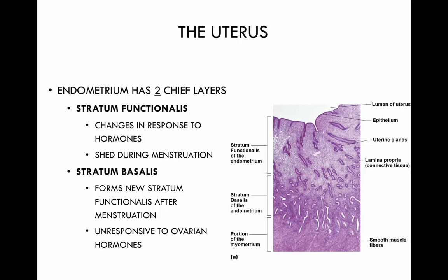The endometrium is composed of two chief layers: the stratum functionalis and the stratum basalis. The stratum functionalis is constantly changing in response to hormones — estrogen and progesterone. The uterus prepares for implantation, so this area will thicken and become more lush, highly vascularized, with lots of nutrients waiting for implantation of the fertilized egg.